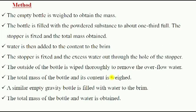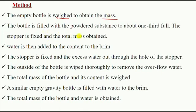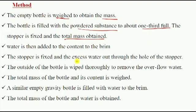Let's go through the method. The empty bottle is weighed to obtain the mass. By now, we know we can use a weighing balance to do this. The bottle is filled with a powdered substance to about one-third full and the stopper is fixed and the total mass is obtained.